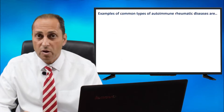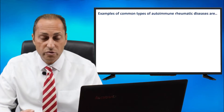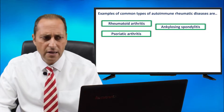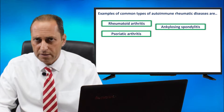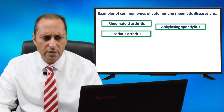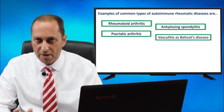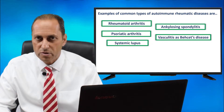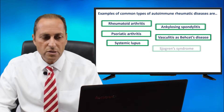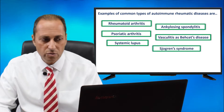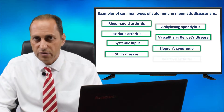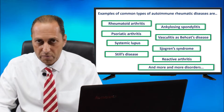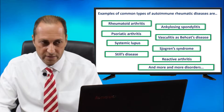Examples of common types of autoimmune rheumatic diseases are rheumatoid arthritis, ankylosing spondylitis, psoriatic arthritis, vasculitis like Behçet's disease, systemic lupus erythematosus, Sjögren's syndrome, Still's disease, reactive arthritis, and many more types of rheumatic diseases.